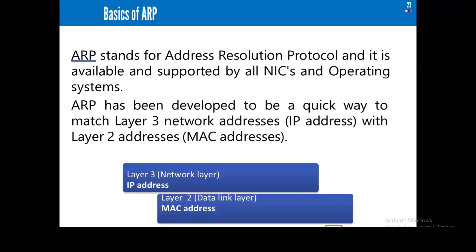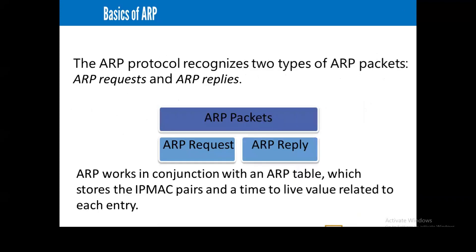Let's quickly explain how ARP works. ARP stands for Address Resolution Protocol, and it is available and supported by all modern operating systems. ARP was developed as a quick way to match layer 3 network addresses (IP addresses) with layer 2 MAC addresses. The ARP protocol recognizes two types of packets: ARP request and ARP reply. ARP works in conjunction with an ARP table, which stores IP addresses and a time-to-live value related to each entry.